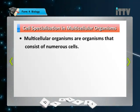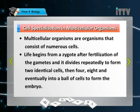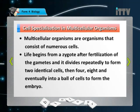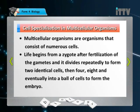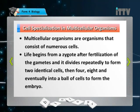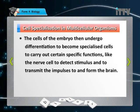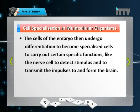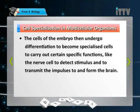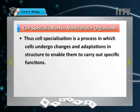Cell specialization also occurs in multicellular organisms — organisms that consist of numerous cells. Life begins from a zygote after fertilization of male and female gametes. It divides repeatedly to form two identical cells, then four, then eight, and eventually into a ball of cells to form an embryo. The cells of the embryo then undergo differentiation to become specialised cells — such as nerve cells to detect stimuli and transmit nerve impulses, and red blood cells which transport oxygen and carbon dioxide to and from the lungs. Thus, cell specialization is a process in which cells undergo changes and adaptations in structure to enable specific functions.